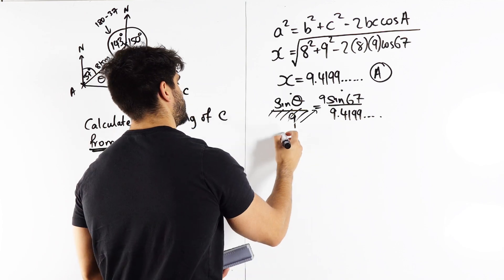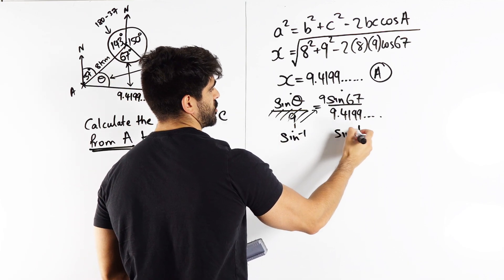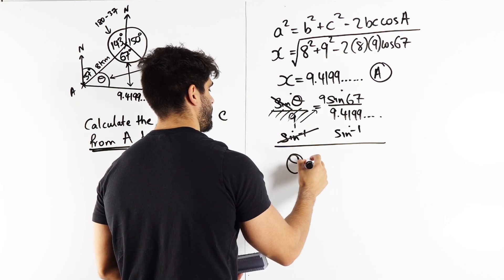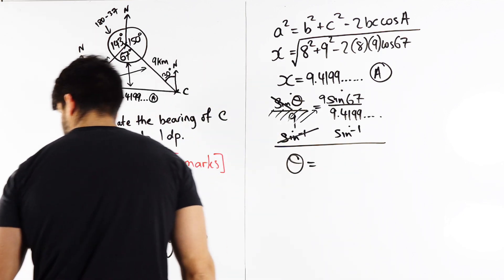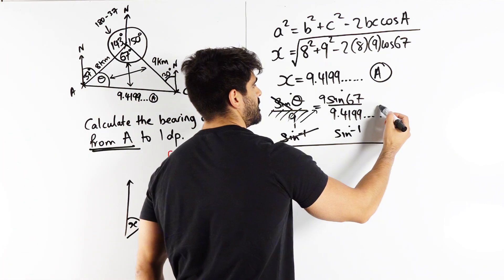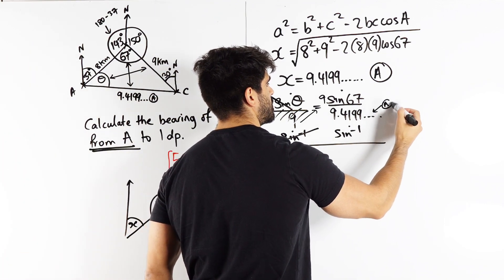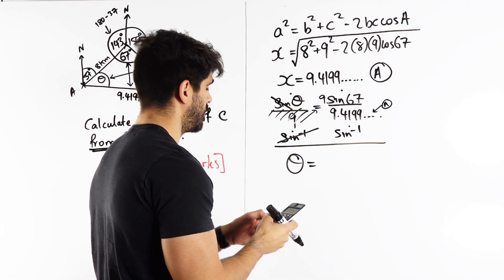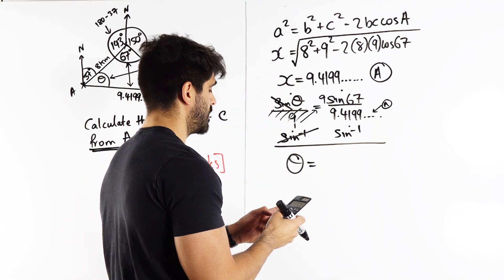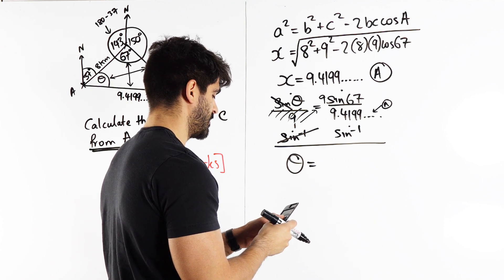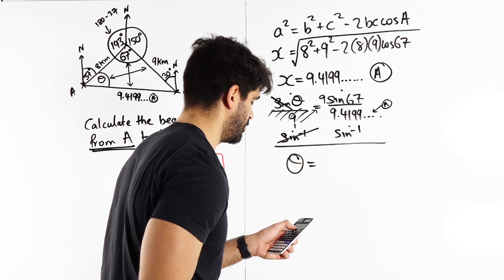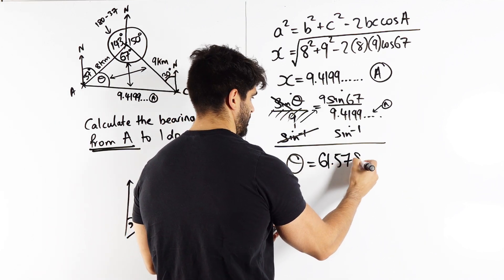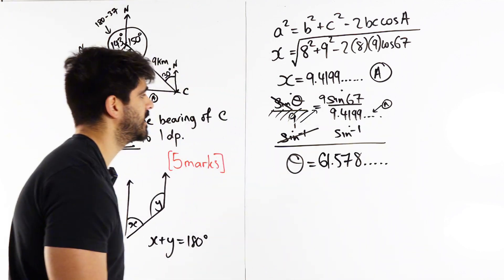And now, we're going to utilize a, what I stored for a. So, I'm going to do inverse sine of 9 sine 67 over alpha a, so things are stored for me 61.57.